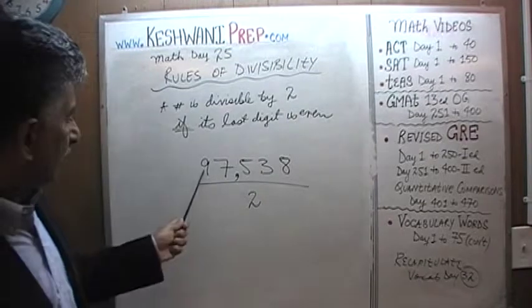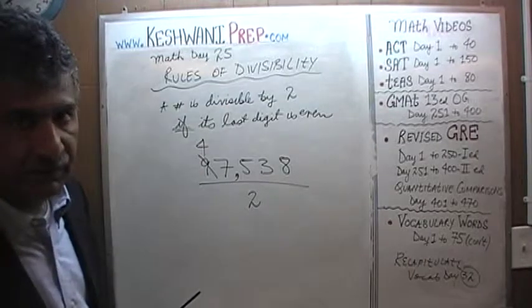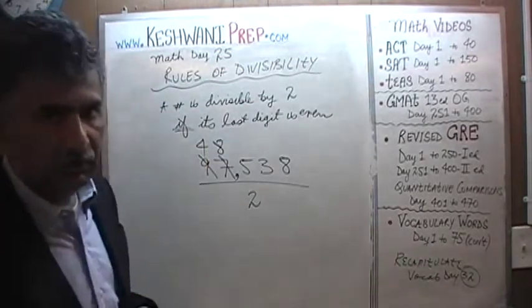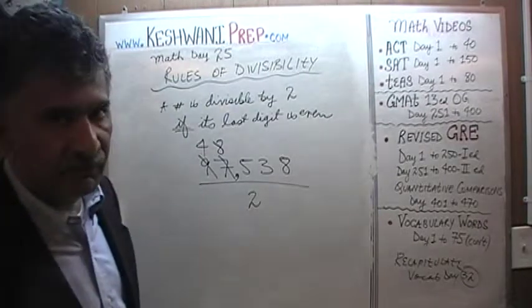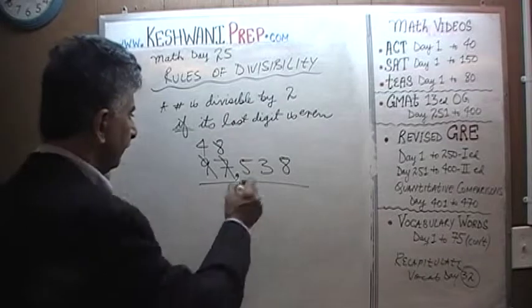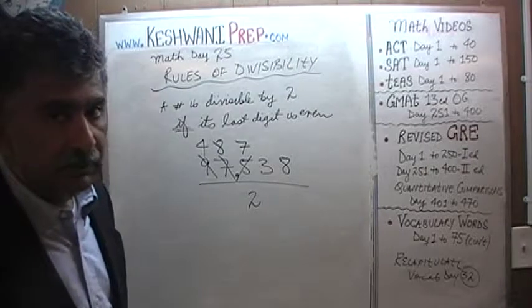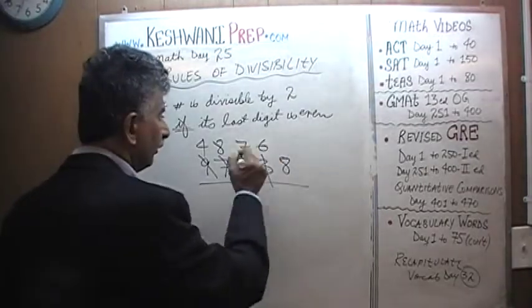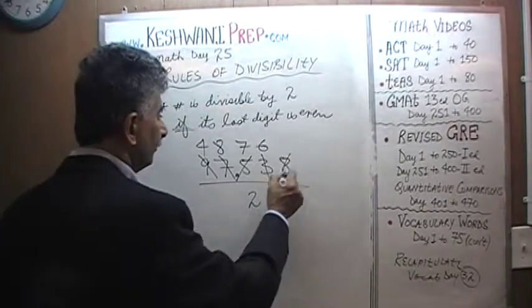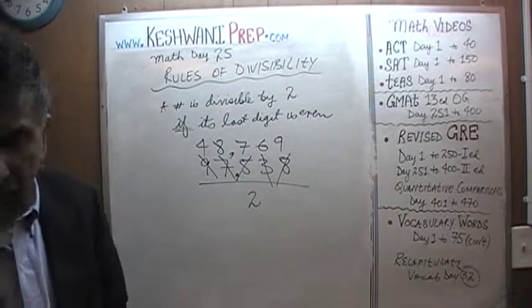97,538 divided by 2: 9 has four 2s, remainder 1 joins 7 to make 17. 17 has eight 2s, remainder 1 joins 5 to make 15. 15 has seven 2s, remainder 1 joins 3 to make 13. 13 has six 2s, remainder 1 joins 8 to make 18. 18 has nine 2s. The answer is 48,769. That's how we tell if a number is divisible by 2.